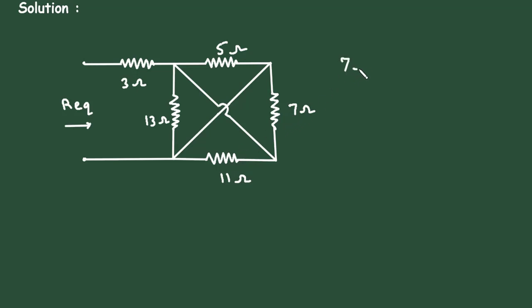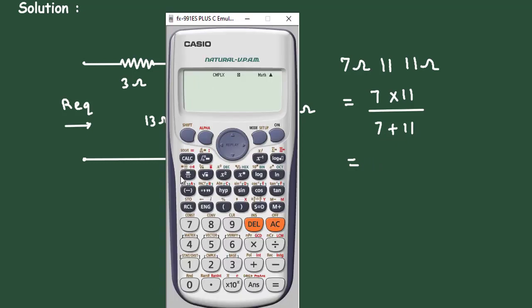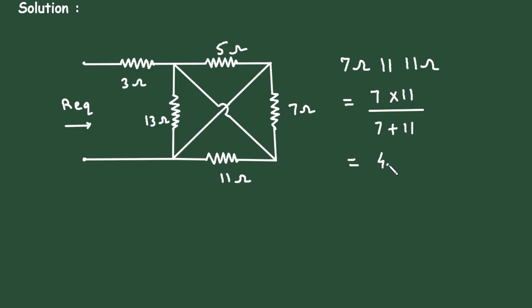So, 7 ohm parallel with 11 ohm will be 7 times 11 divided by 7 plus 11, which equals 4.27 ohm.